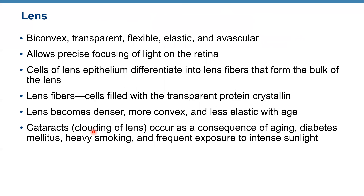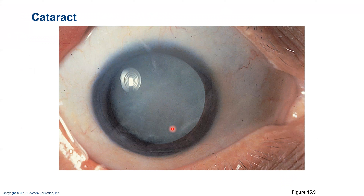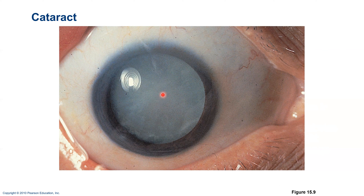The crystallin can lose its structure and become cloudy — this clouding of the lens is called a cataract. Cataracts can result from aging, diabetes, heavy smoking, or frequent exposure to intense light. This is how a cataract looks — the lens becomes cloudy and the patient loses vision. In cataract surgery, the cloudy lens is removed and replaced with a clear transparent artificial lens, allowing light to enter the eye again.